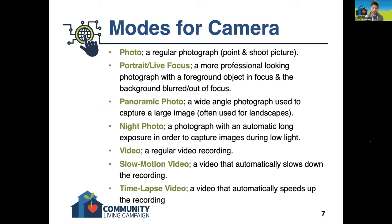The fourth mode is night photo. This is a photograph with an automatic long exposure in order to capture images during low light. If some of you are familiar with using a film camera, a long exposure just means the shutter will stay open longer so that more light comes into the camera.